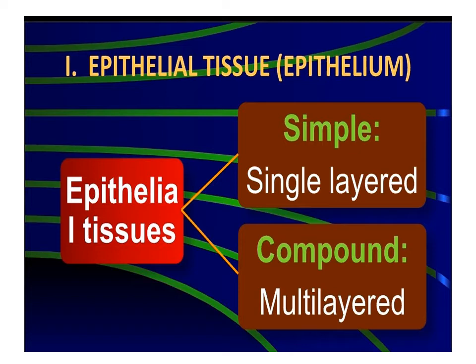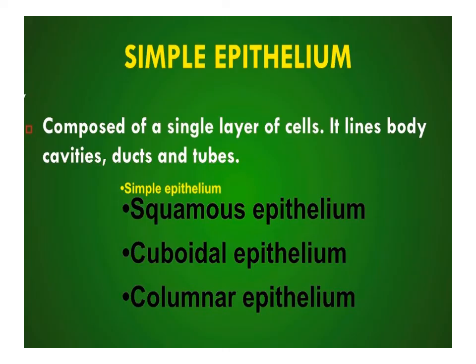Epithelial tissue is broadly classified into two main parts: simple epithelium and compound epithelium. Simple epithelium is single-layered and compound epithelium is multilayered. Simple epithelium functions as a lining for body cavities, ducts, and tubes, and is classified into three types: squamous epithelium, cuboidal epithelium, and columnar epithelium.